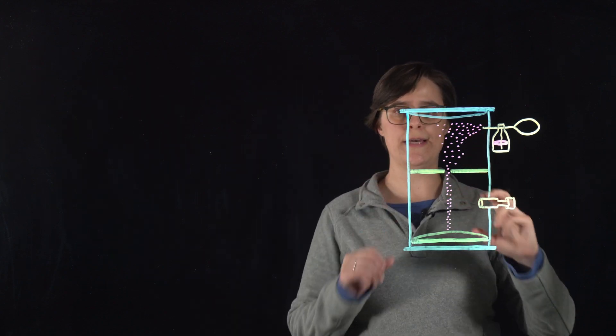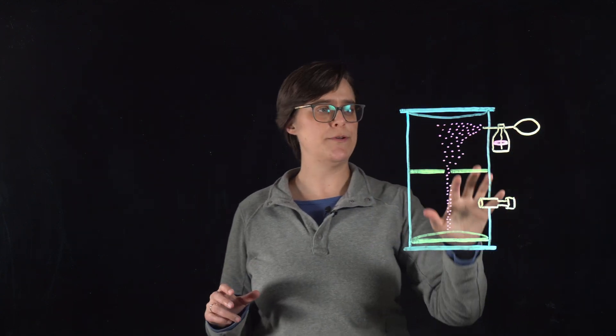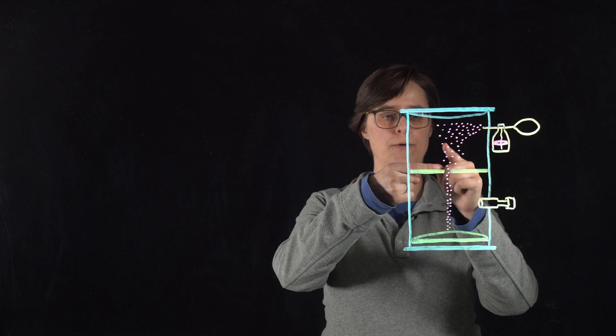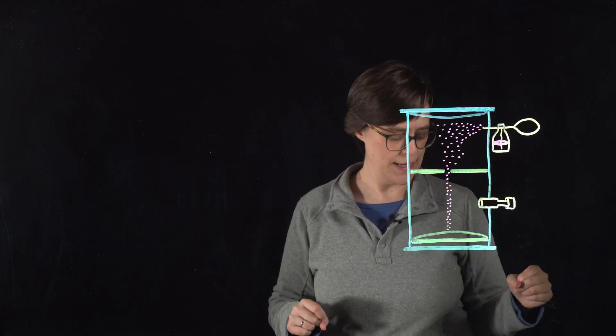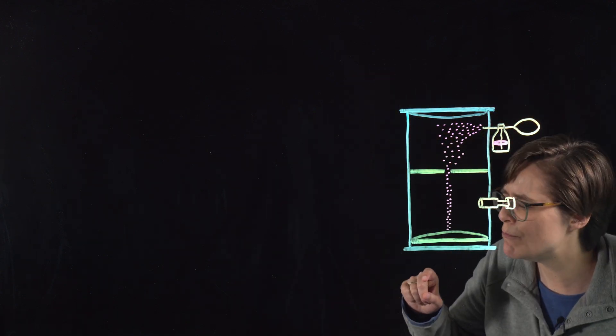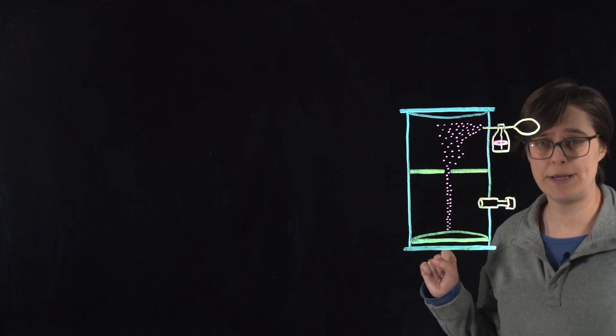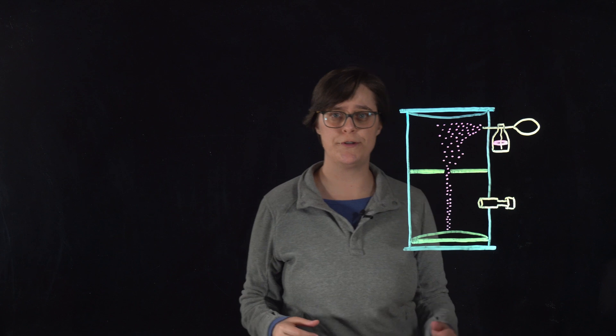In this apparatus there is an atomizer, and it produces a mist of tiny oil droplets. Some of them fall through a pinhole in this metal plate. Now looking through this eyepiece, Millikan was measuring very carefully the rate at which they fell, mostly due to gravity.